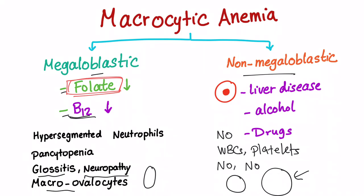The most common cause of non-megaloblastic is alcoholism. You also have liver disease and drugs as causes. In liver disease, the MCV will be high, around 105.